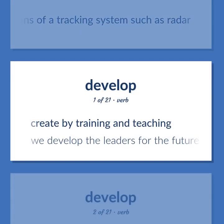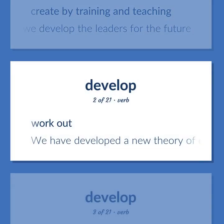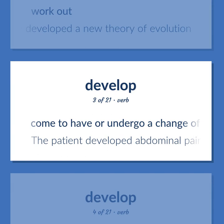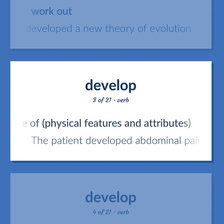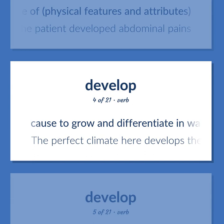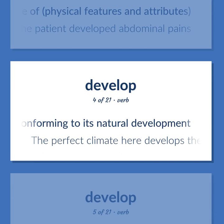Develop: Create by training and teaching — we develop the leaders for the future. Work out — we have developed a new theory of evolution. Come to have or undergo a change of physical features and attributes — the patient developed abdominal pains. Cause to grow and differentiate in ways conforming to its natural development — the perfect climate here develops the grain.